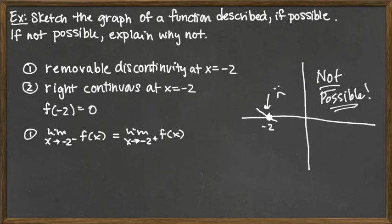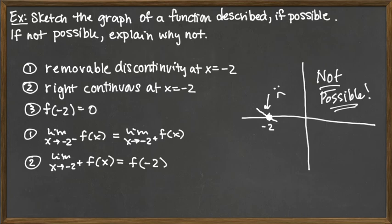The second thing that we are being told is that it needs to be right continuous at negative 2. So what that's telling me is that the limit from the right of the function has to match the function value, so f of negative 2. Well, f of negative 2 here is equal to 0. Perhaps let me go ahead and write that in a separate statement here.